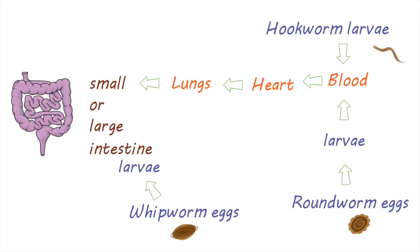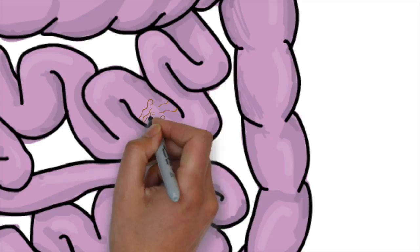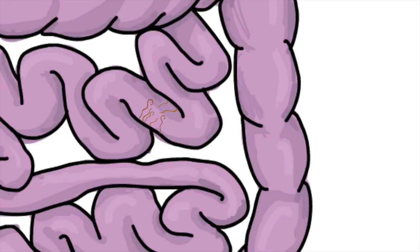Once in their final destinations, they attach to the wall of the intestine, grow, mature, and can live there for many years. They also produce thousands of eggs per day, which are then passed out in the feces to start the cycle of infection again.